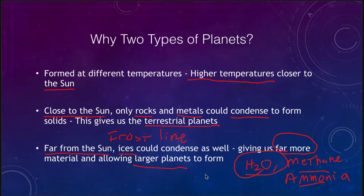So why are large planets found in the outer solar system? They had a bigger base of materials from which to build. They could certainly form rocks and metals — those could condense in the outer solar system — but in addition they could incorporate water, methane, and ammonia, which allowed much larger planets to build up. And if they got large enough, they could directly pull in hydrogen and helium gas, which made up the vast majority of the solar nebula, allowing the Jovian planets to become much larger.